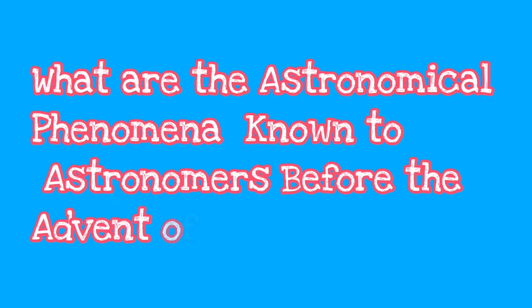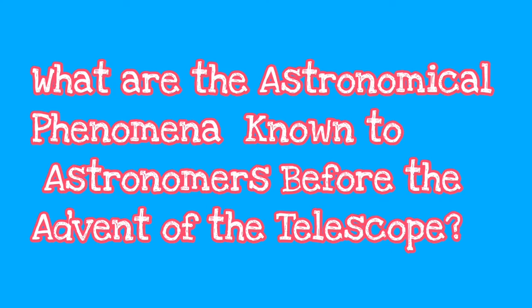Now what are the five astronomical phenomena known to astronomers before the advent of the telescopes? Well, number one is the phases of the moon.